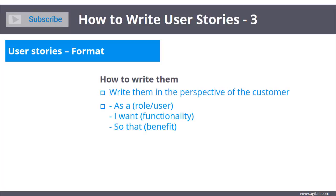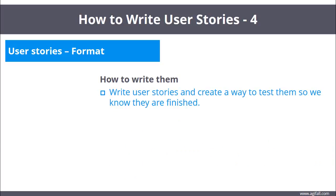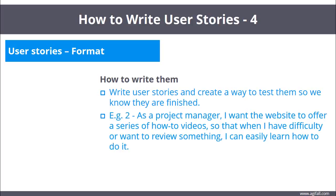So, let's take a look at an example: 'As a lover of picture taking on my cell phone, I want to be able to zoom in with high resolution so that I can take great pictures of nature and animals.' One valuable thing to remember is that when we write the stories, we need to be able to test them so we can know when they are finished. This is known as the acceptance criteria — the story is done and accepted by the customer, or it is declined. We need to write our stories so we can test them accordingly.